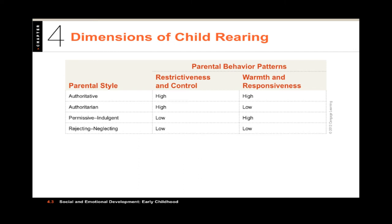The fourth style — the good one identified by Baumrind — is the authoritative parenting style. Not authoritarian; authoritative. Although these parents are highly restrictive and make strong demands for maturity from their children, they also reason with their kids and show strong support and love. This style seems to generally produce the most capable kids — they show independence, high self-esteem, and social competence. It's also worth noting that parenting styles can often be responsive to the child's innate temperament, which can make it easier or harder to use a particular style.